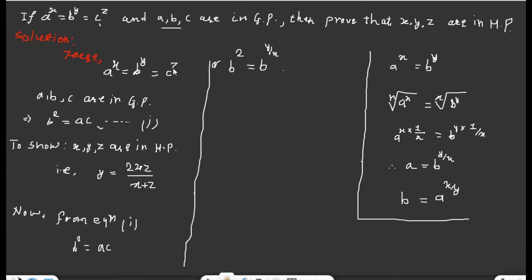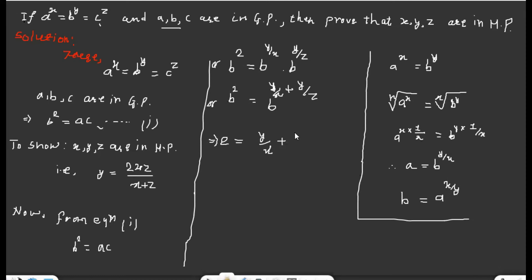The value of c with respect to b is b to the power y over z. So b squared equals b to the power y over x times b to the power y over z. Since the bases are the same, by the exponential law we get: 2 equals y over x plus y over z.